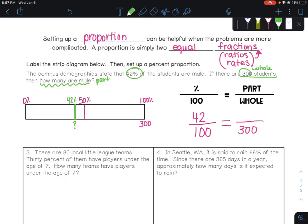If I were to solve this really quickly, what I'm noticing is that if these are supposed to be equal fractions, I could just do times 3 on the bottom. 100 times 3 is 300. Keep them equal. Do the same thing on the top. Whatever 42 times 3 is, 126. There's my answer. 126 male students.